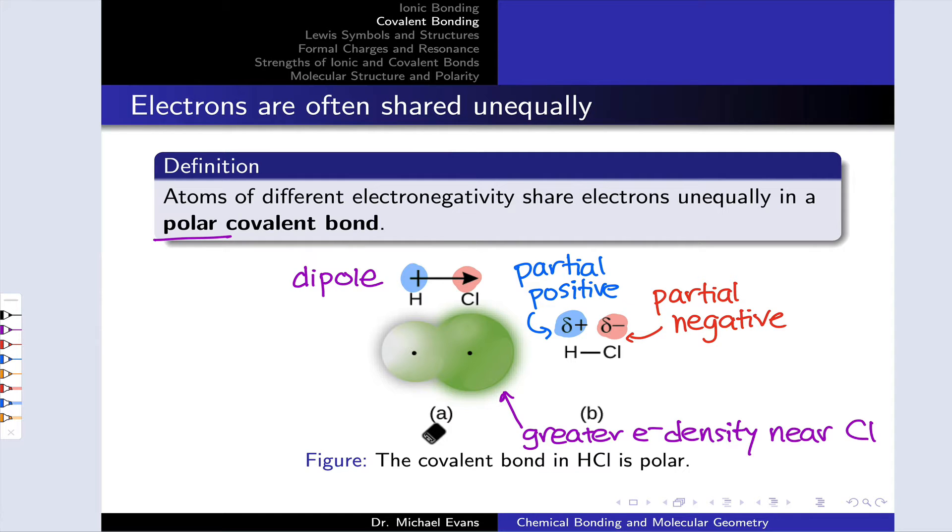We're going to return to polar covalent bonds when we talk about molecular polarity at the very end of this unit. And it's going to be important to recognize polar covalent bonds by looking for atoms that differ quite a bit in electronegativity.